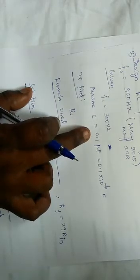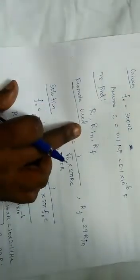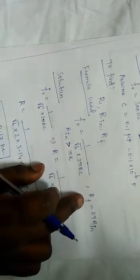Given value: frequency is 300 Hz. We assume C equal to 0.1 µF, where µ value is 10⁻⁶. The formula used is 1 by 2πRC. For the RC phase shift oscillator, Rf equal to 29 Rn.